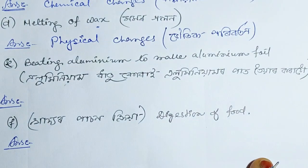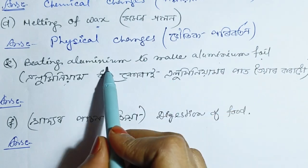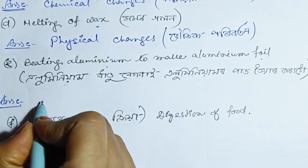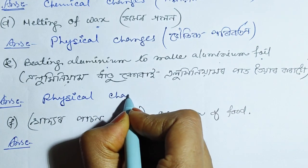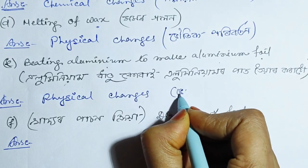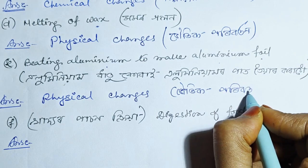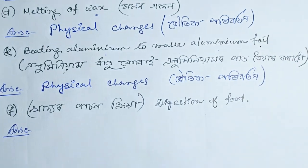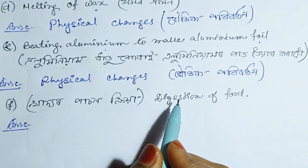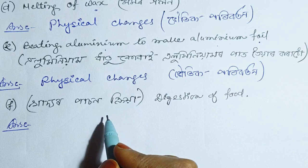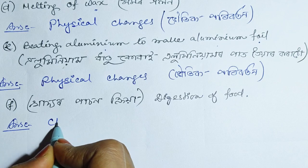Beating aluminum to make aluminum foil is a physical change. Digestion of food is a chemical change.